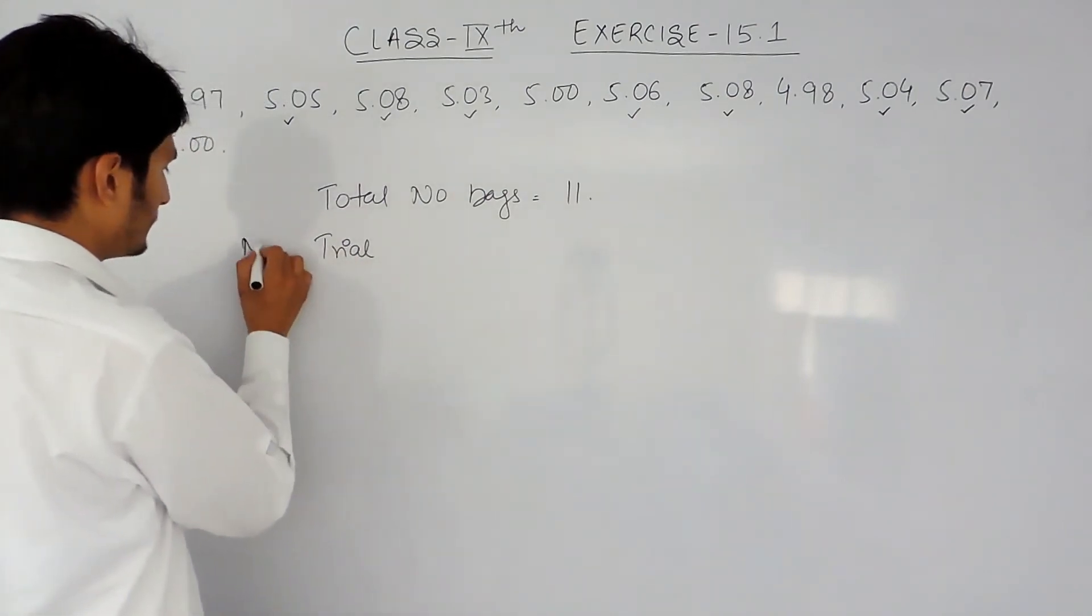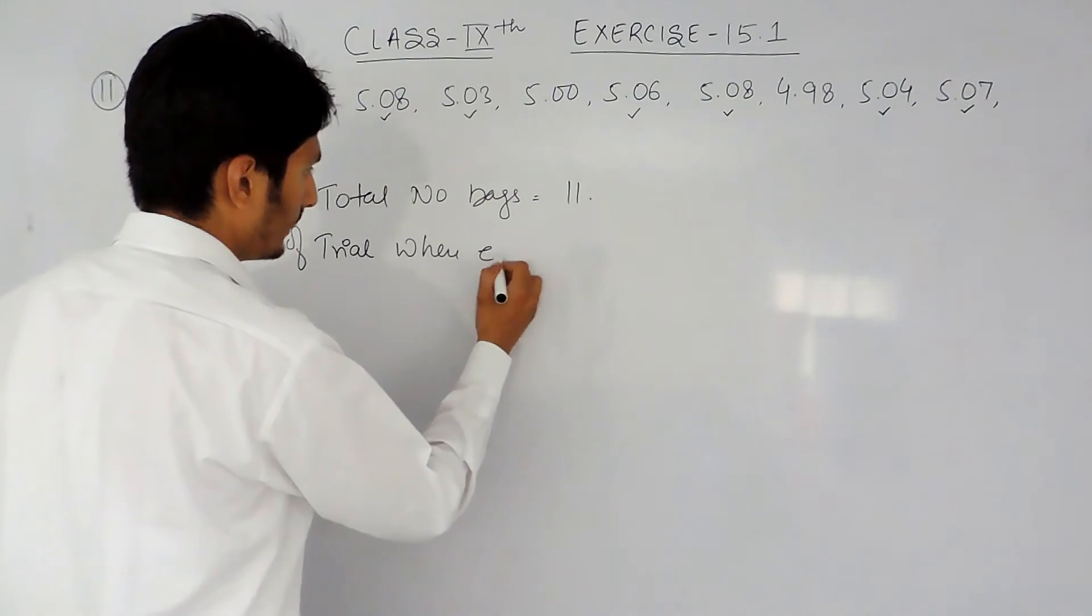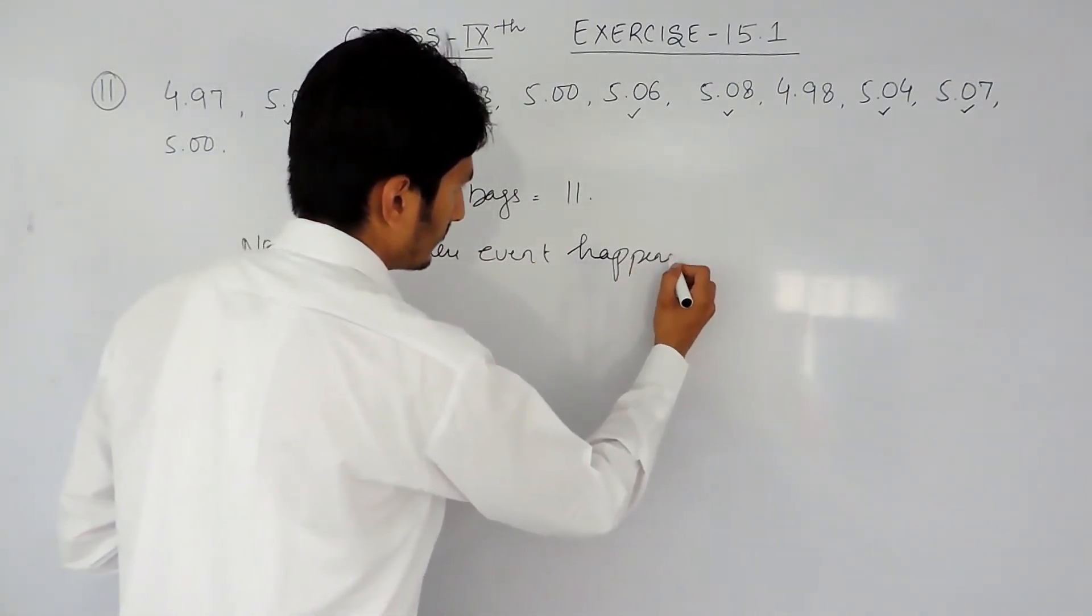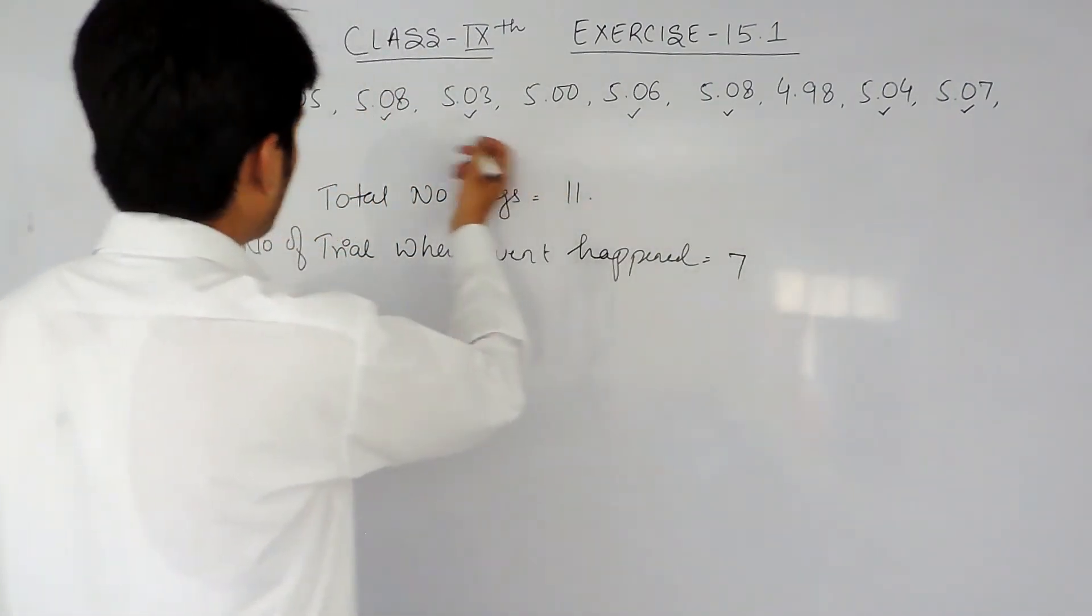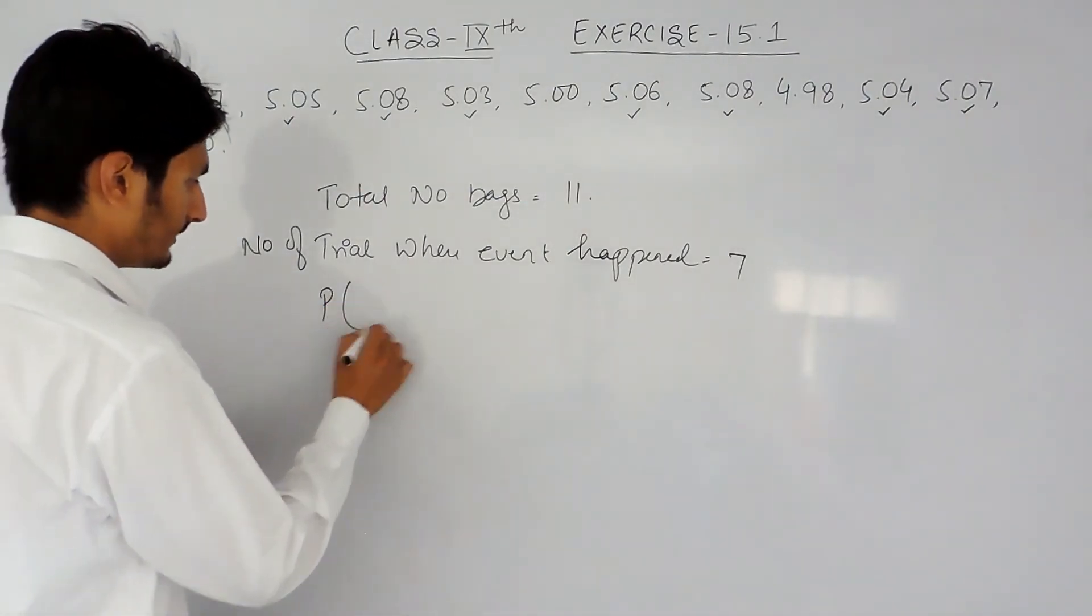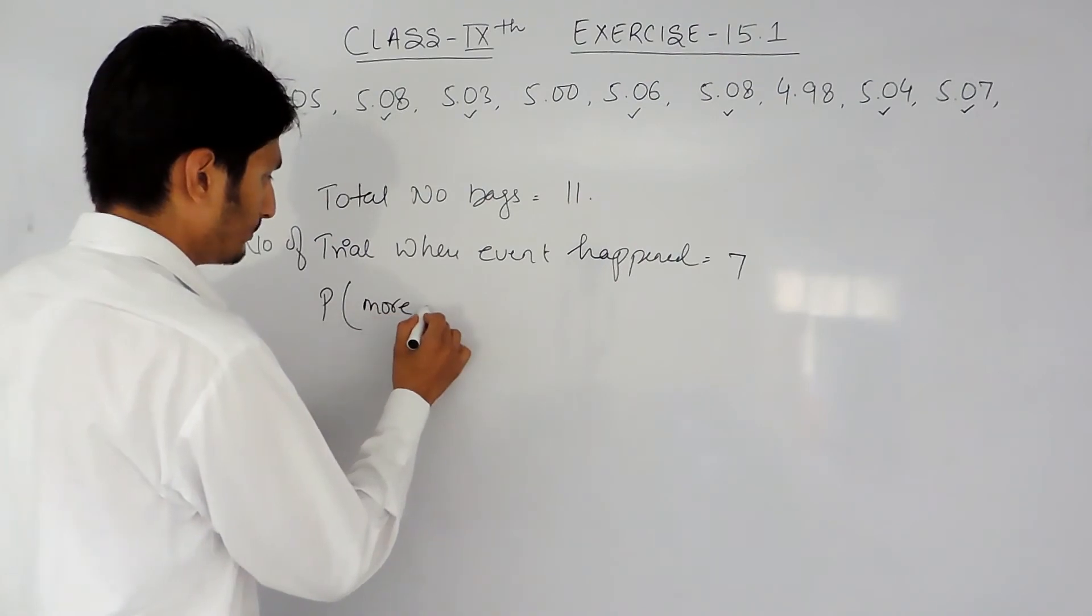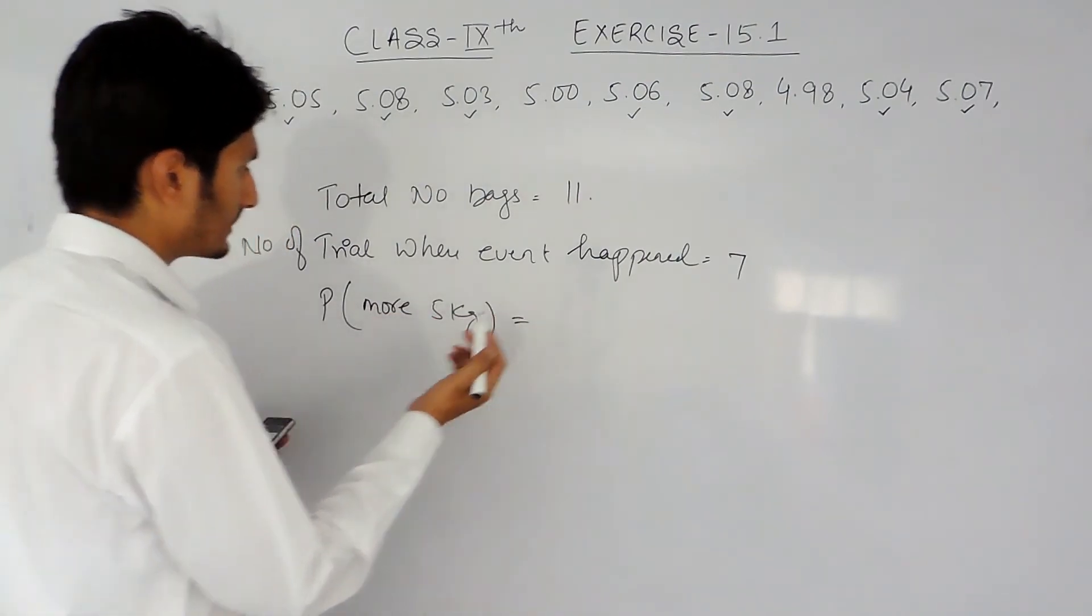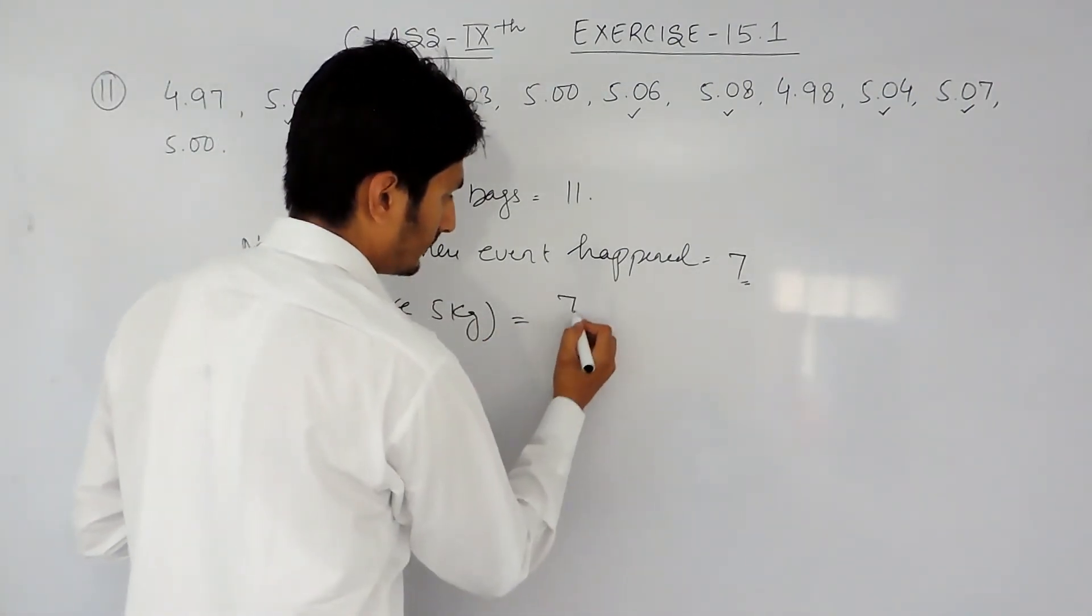One, two, three, four, five, six, seven. So I have to find the probability that the weight of the bag is more than five kg. In that case, the number of trials in which this event has occurred is seven upon the total number of bags.